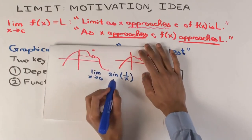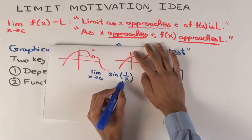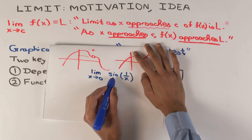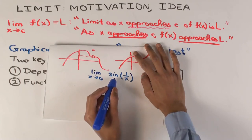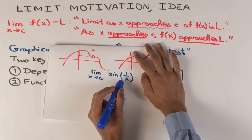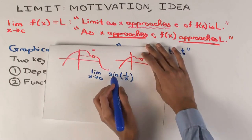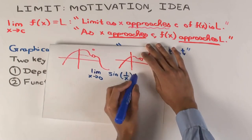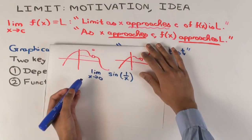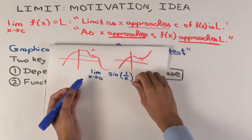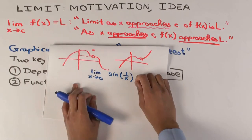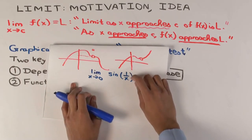So this is a graph of the function sine of one over x — not one over sine x, which would just be cosecant x, but sine of one over x. Now, this function itself is not defined at x equals zero, but just the fact that it's not defined isn't enough for us to say the limit doesn't exist. We actually have to make a picture of this and understand what the limit is going to be.